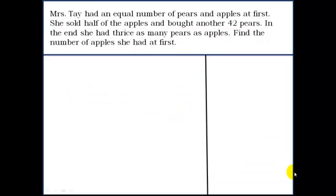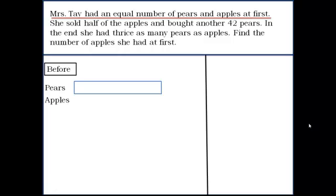Now we are going to see the same question and try to understand it in the way that we would be writing the answers in the answer sheet. Mrs. T had an equal number of pears and apples at first. We represent this as a before condition and draw models for both pears and apples. This shows that apples and pears are equal at first.